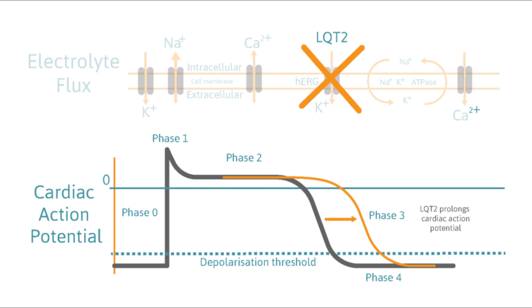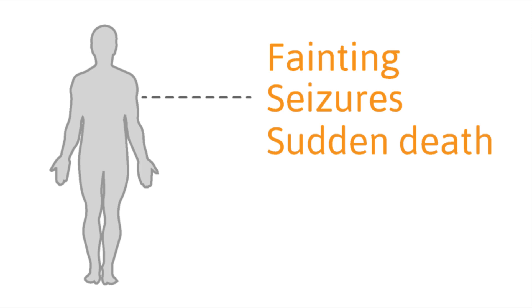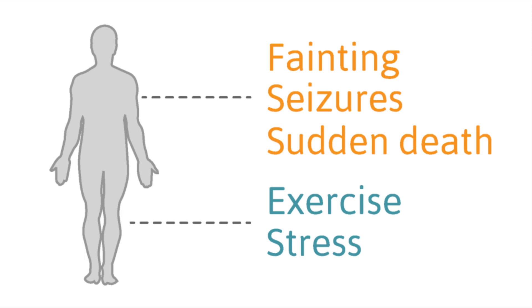A long QT interval can upset the careful timing of the heartbeat and trigger dangerous heart rhythms, which can result in fainting, seizures, or sudden death. These episodes are often triggered by exercise or stress.